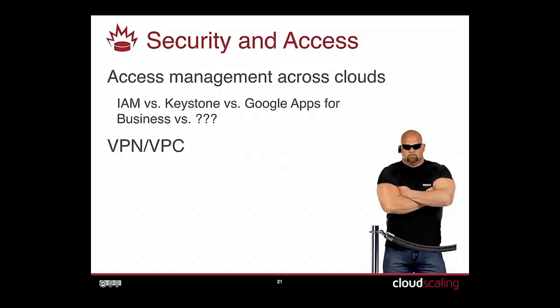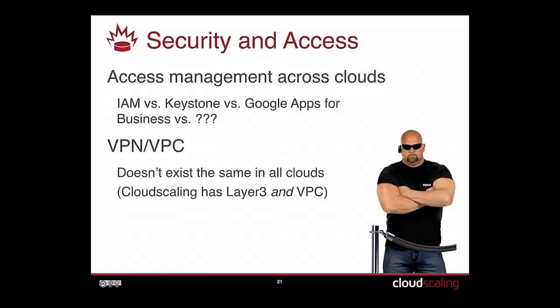VPN and VPC — network layer security exists and it's good, but it's not the same in all clouds. In OpenStack we have a version of VPC. Google goes straight to VPC and doesn't have a traditional layer-three networking model. There are two kinds of sysadmin: guys that have been hacked, and guys that don't know they've been hacked. When you design your app, think about how quickly you can respond to a security incident — what if there's a kernel-level exploit and you need to roll out new code to your entire network at once?